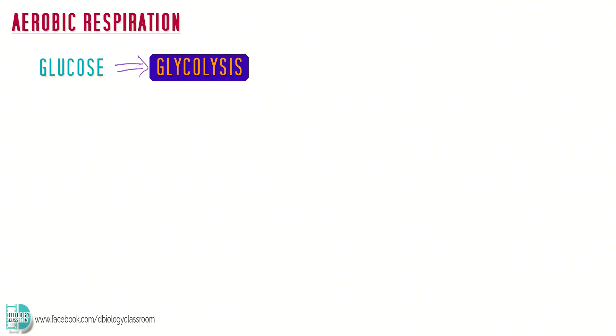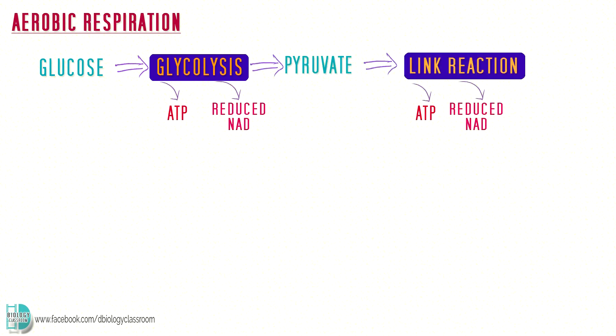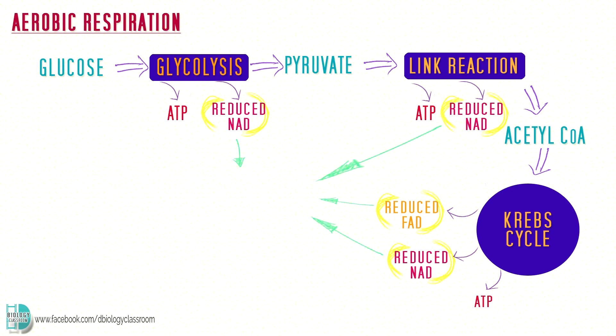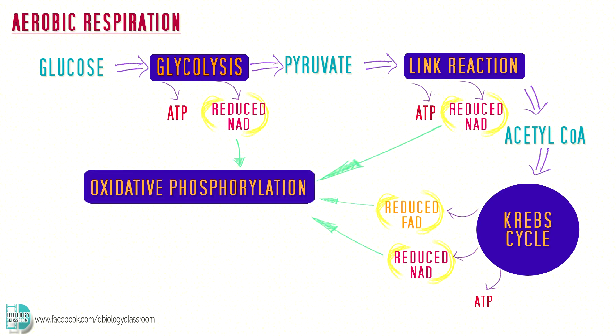Now let's put all the processes together in one picture. Glucose is oxidized during glycolysis. The end product, pyruvate, goes through the link reaction and forms acetyl-CoA. Acetyl-CoA participates in the Krebs cycle. All the reduced NAD and reduced FAD produced in these stages go through oxidative phosphorylation and produce a lot of ATP. And this is the big picture of aerobic respiration.